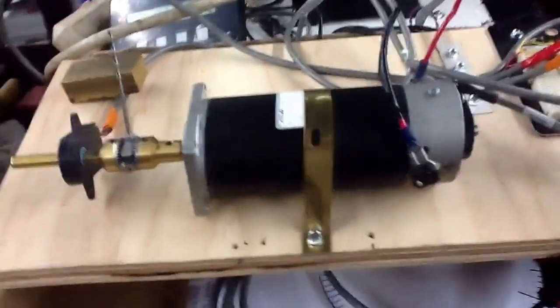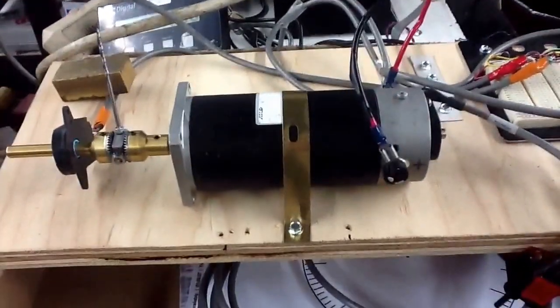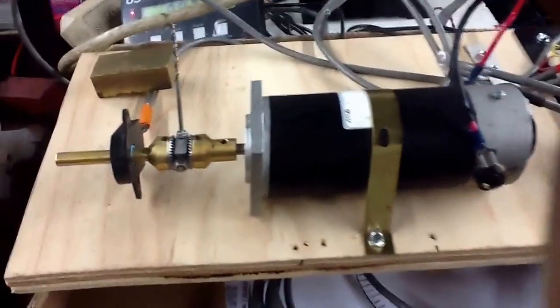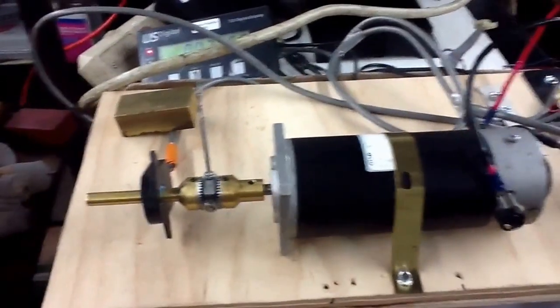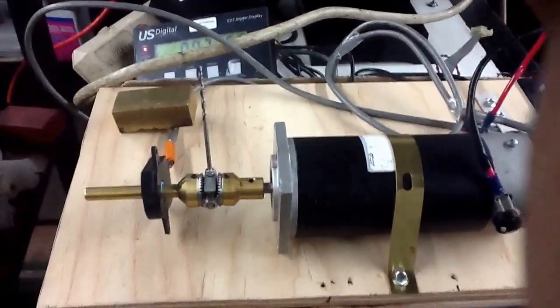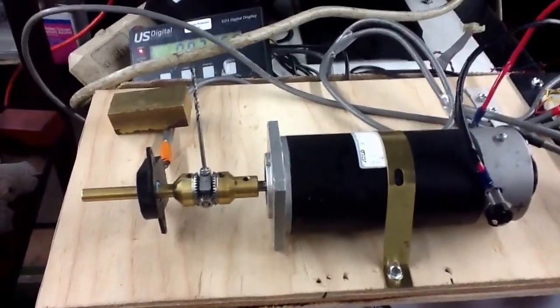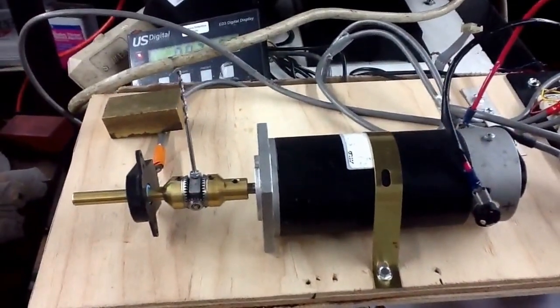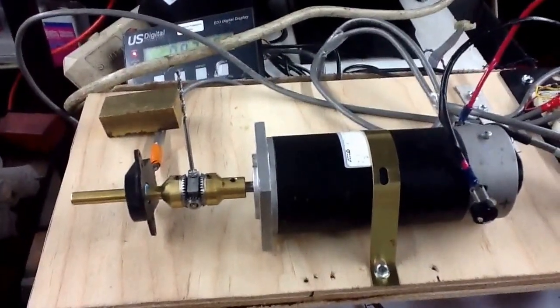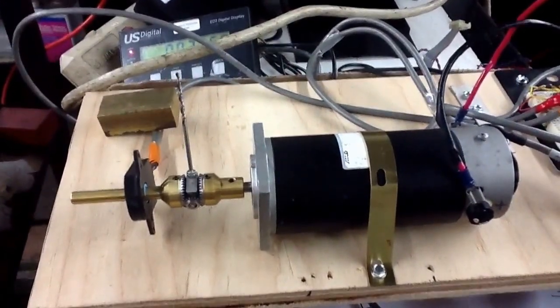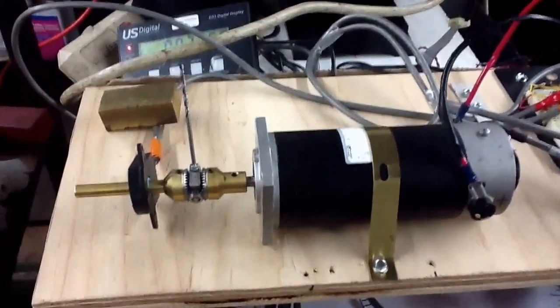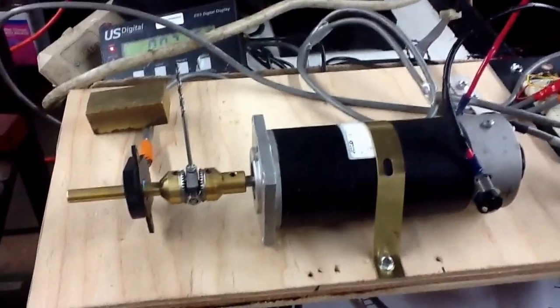Right now, the encoder resolution on both the motor and the one on the left are set at 2,000 pulses per revolution. And I've calculated the following error on this thing to be about two pulses. So that means when I start to turn the encoder on the left, two pulses later the servo motor starts to spin.